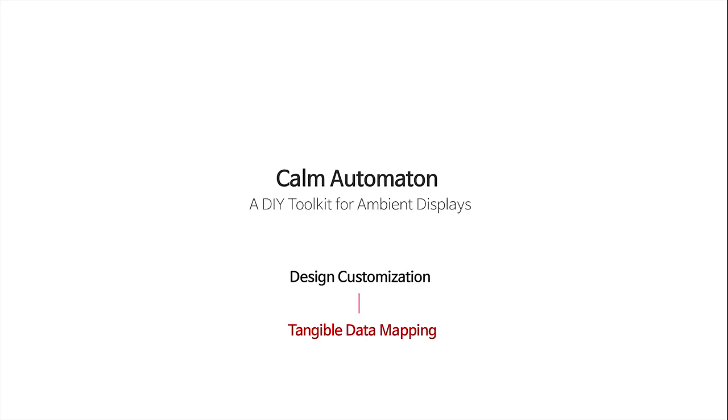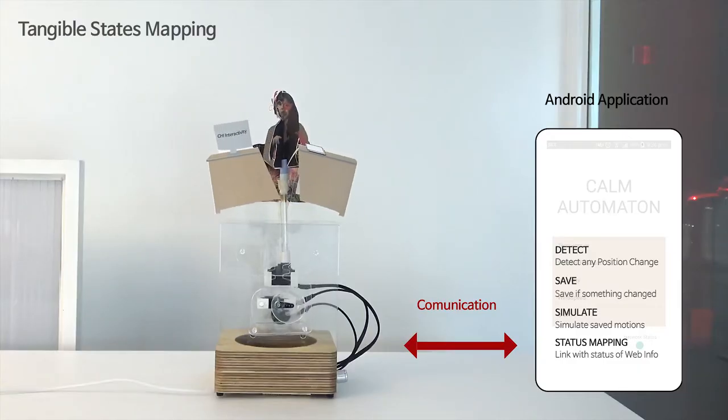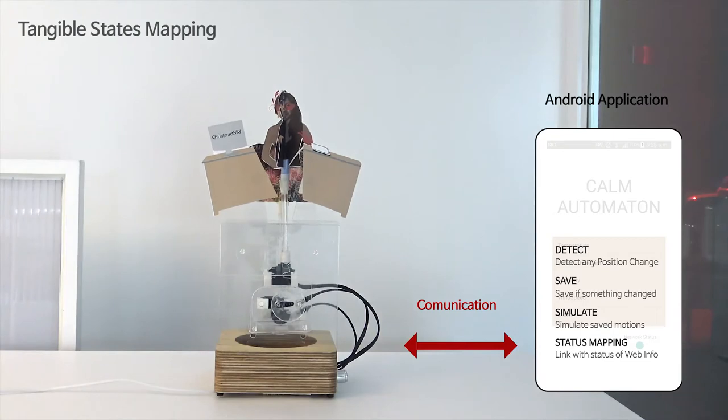The next step is to synchronize the automaton with internet data as if playing with tokens. We provide an Android application that detects, saves, and simulates any shape change of the motion modules and easily maps the shape of data synchronized from the internet.